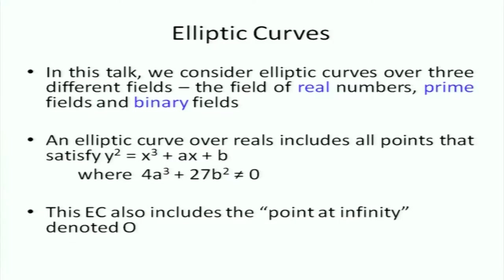In this talk, we consider elliptic curves over three different fields: the field of real numbers, prime fields, and binary fields. An elliptic curve over reals includes all points satisfying the equation y² = x³ + ax + b, where 4a³ + 27b² ≠ 0. Interestingly, the elliptic curve also includes a special abstract point called the point at infinity, designated as 0.